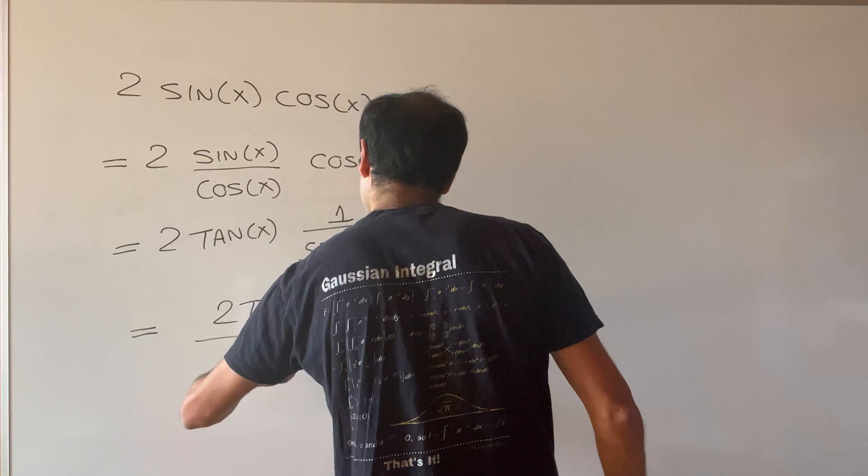Now let's see how we can use that in our integral. We had this integral, but now we can write sine in terms of tangent, so this becomes two times the integral from zero to pi over two of one over four minus two tangent x over one plus tangent squared x, all squared, dx. You can put the tangent squared on the numerator — let's see what happens to the denominator.